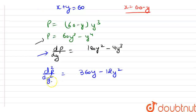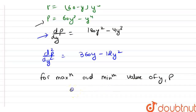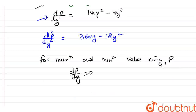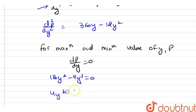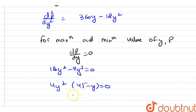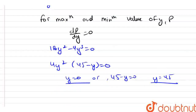For the maximum or minimum value of P, we set dP/dy equal to 0. So: 180y² minus 4y³ equals 0. Taking 4y² common, we have 45 minus y equals 0. So y is equal to 0 or y is equal to 45. There are two values of y: 0 and 45.